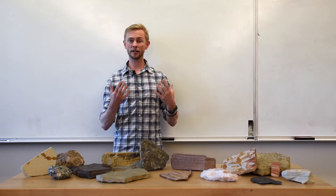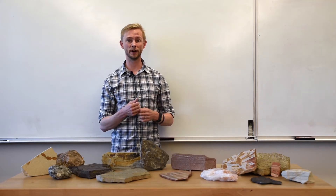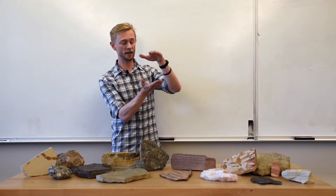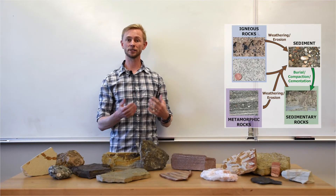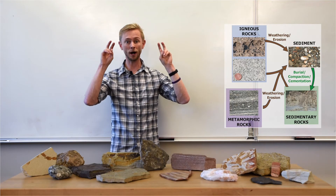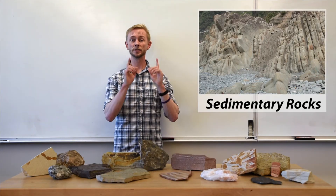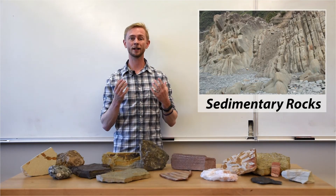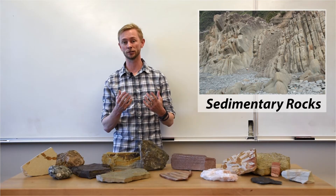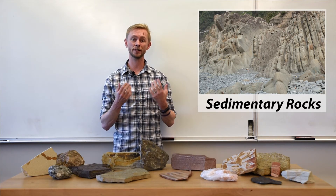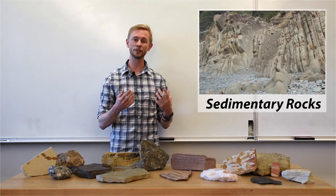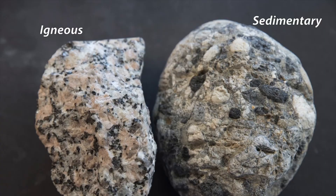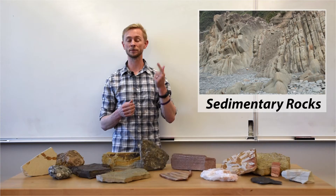Over time, as sediments accumulate in these differing depositional environments, the deposits of sediment will get thicker and thicker, compacting and cementing the sediments at the bottom of the pile. This process of lithification, or becoming a rock, forms sedimentary rocks. Similar to igneous rocks, we can define and classify sedimentary rocks according to their texture, though we need a slightly different definition in this case. We'll still generally say that texture is the size and arrangement of the individual pieces that compose the rock, but unlike igneous rocks, these individual pieces will be the clasts or precipitated minerals making up the rock.